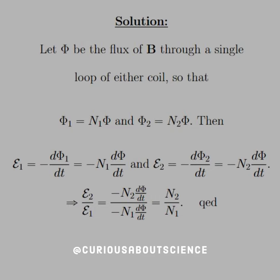Then what we see is that E1 is equal to d phi1 over dt is equal to minus N1 d phi dt, and then E2 is equal to negative d phi2 over dt, which is equal to negative N2 d phi dt.